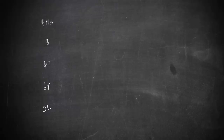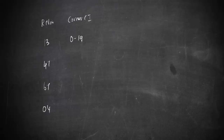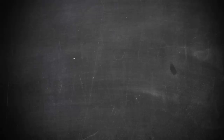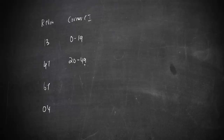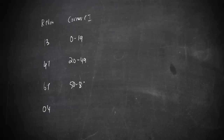The random numbers are 13, 67, and 04. The corresponding class intervals are: 0 to 19 for 13, 20 to 49 for 47, 50 to 89 for the third case, and again 0 to 19 for the fourth case.